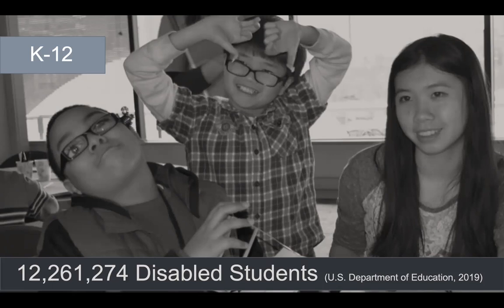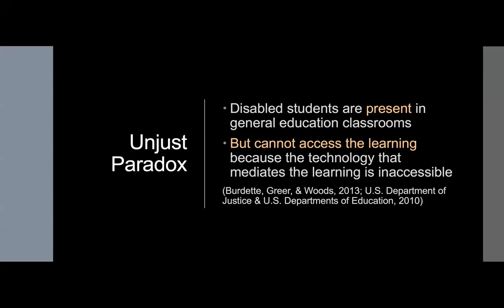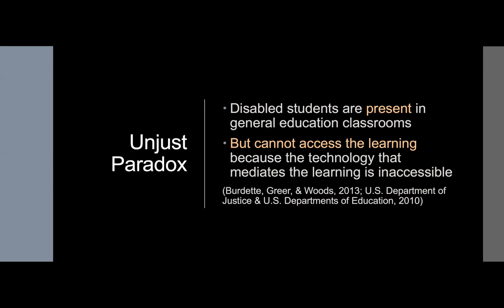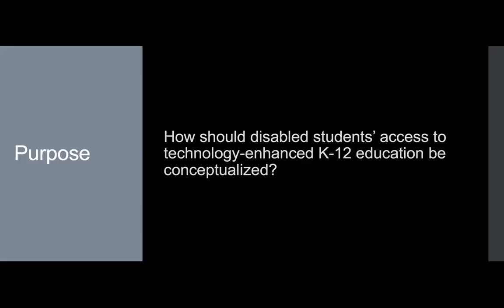What about non-pandemic technology-enhanced learning environments? Do disabled students have full and equitable access to those? The use of technology often erects new barriers for disabled people because not all technology is designed for disabled people's use. In fact, a plethora of technology used in K-12 is inaccessible to disabled people. Consequently, as technologies are being incorporated into K-12 classrooms, disabled students are increasingly confronting the paradoxical situation in which they're present in the general education classroom but cannot access the learning that takes place therein because the technology that mediates that learning is inaccessible to them. To confront this paradoxical situation and ensure disabled students have full and equitable access to general education in the 21st century, one must first understand the complex situation.